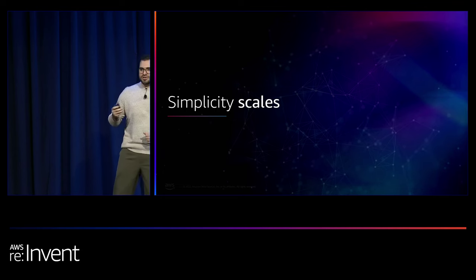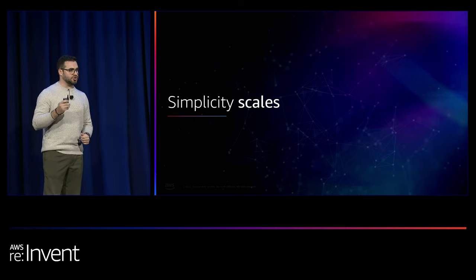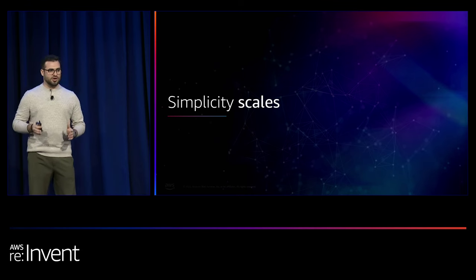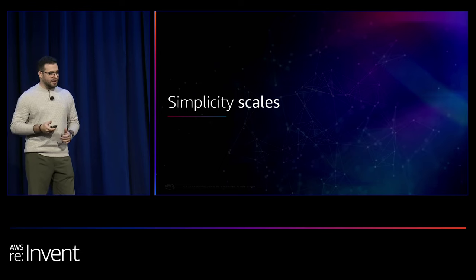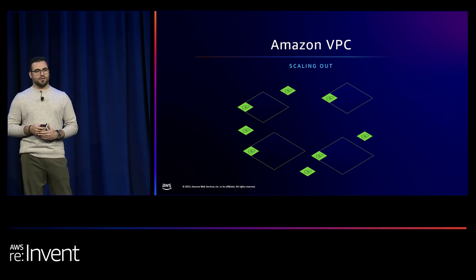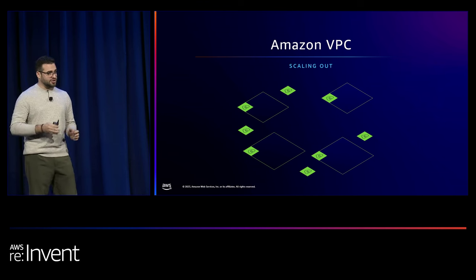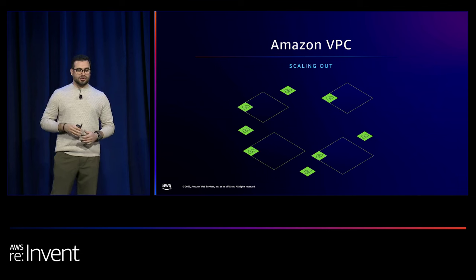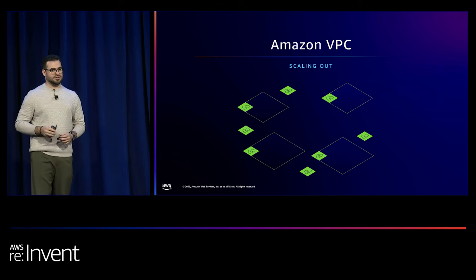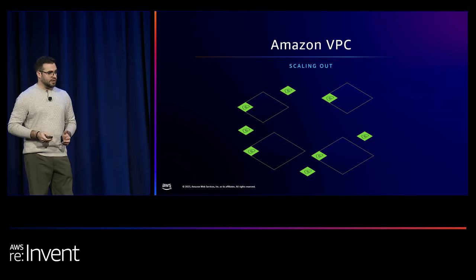That leads us to our core tenet — the principle that all of our development teams across the infrastructure organizations, and also the overlay networking services that you consume today as a customer, follow. These are the guideline principles: simplicity scales. The best example for that would be VPC. When we launched VPC, we really thought customers were only going to use one VPC — that was actually hard-coded in our system. If you needed more than one VPC, you had to give us a call. And we started to receive a lot of calls because customers started using VPC to segment their business units or applications, going into a multi-VPC environment.